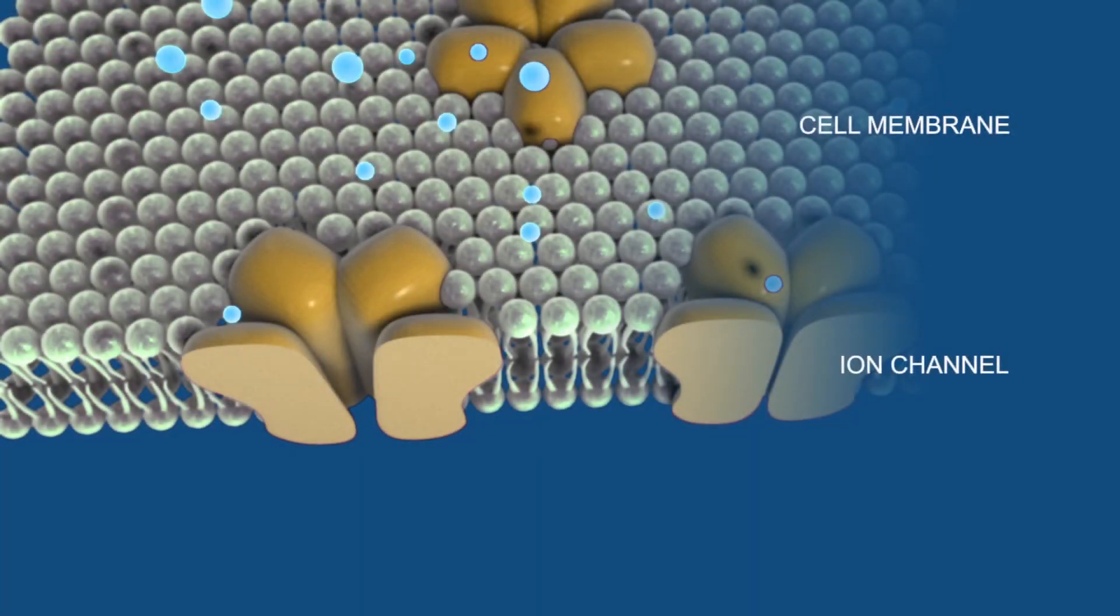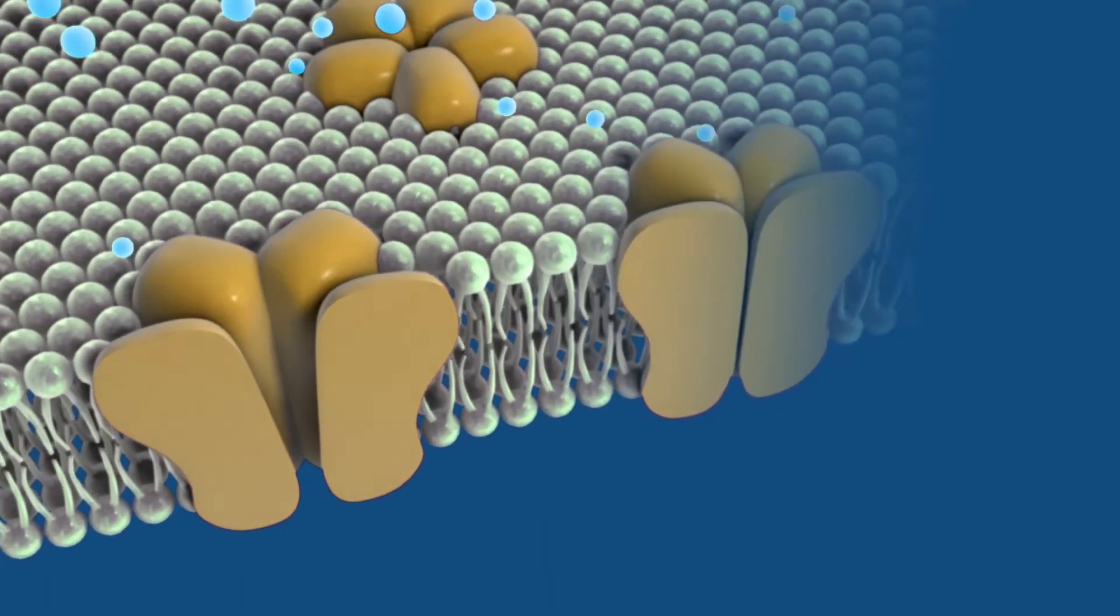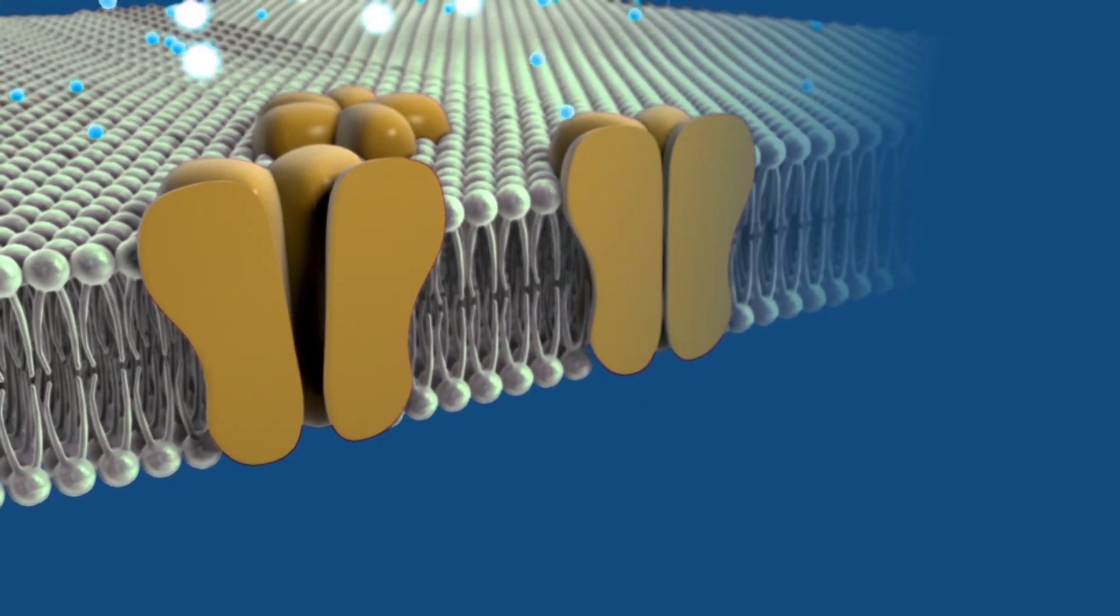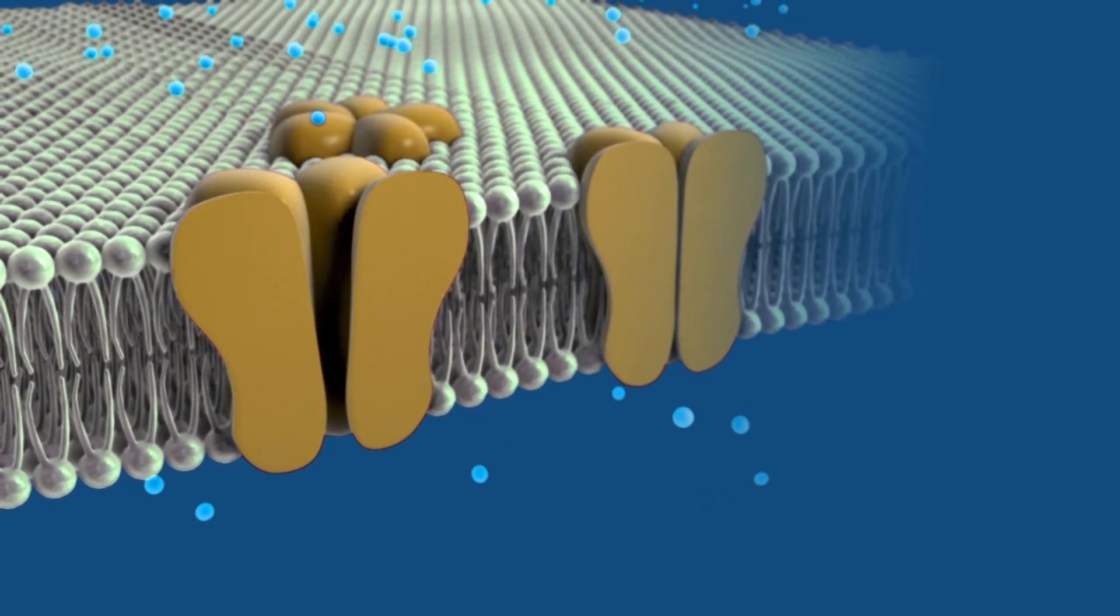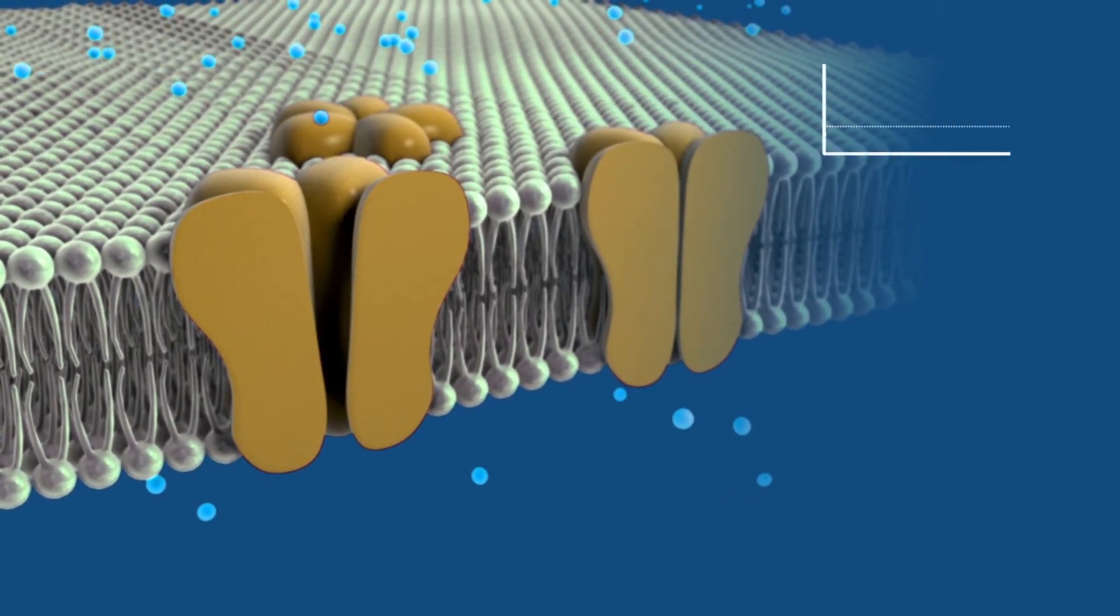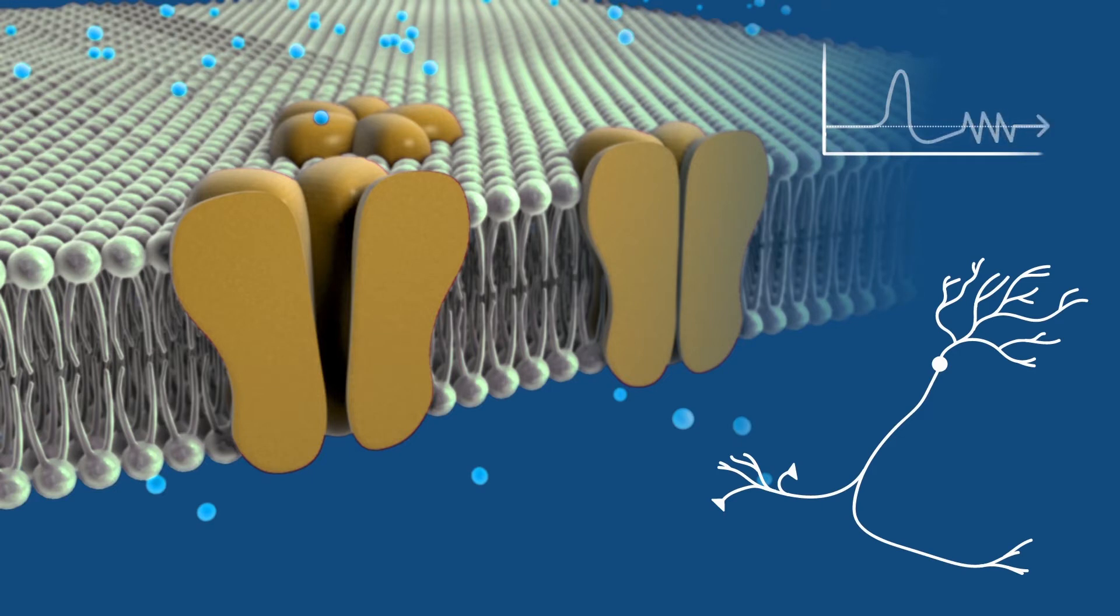Embedded in cell membranes, ion channels are tiny pores that allow charged atoms to move in and out of cells. In the nervous system, this flux of charged atoms generates the electrical signals neurons use to communicate with each other.